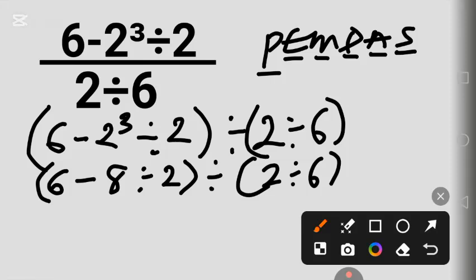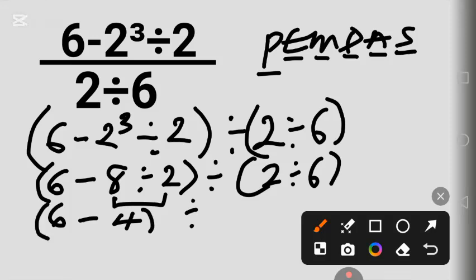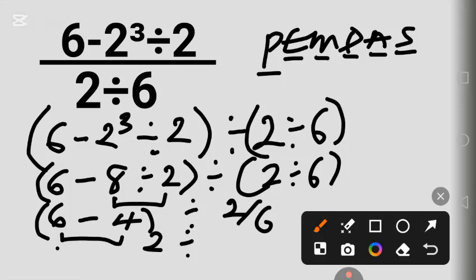8 divided by 2 is 4. Then 6 minus 4 gives us 2, divided by 2, divided by 6 — which is 2 over 6. Then 2 divided by 2 is 1, giving us 1 over 3.